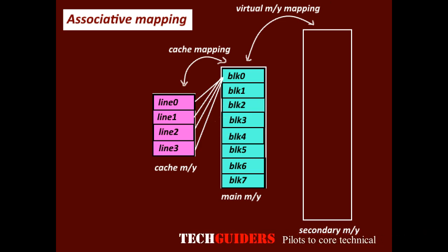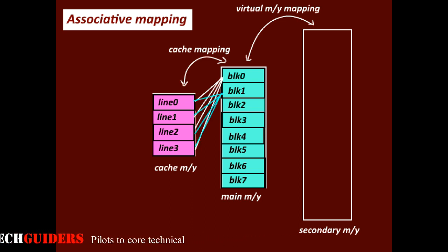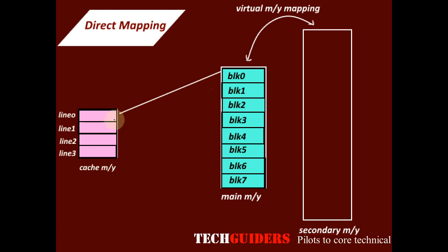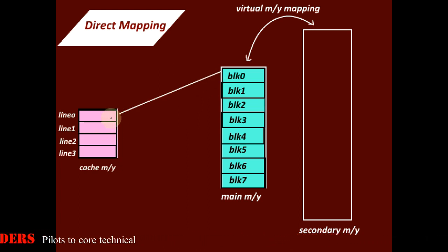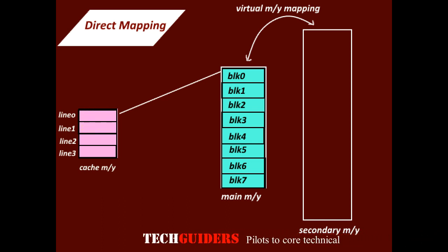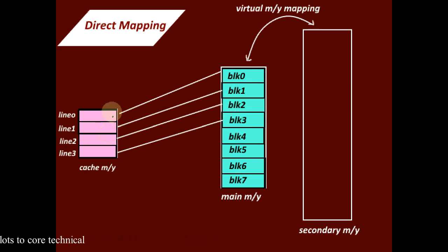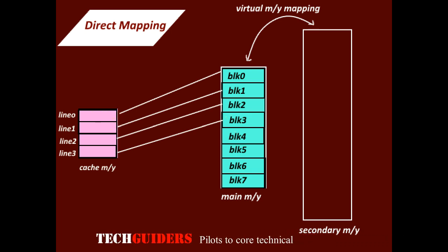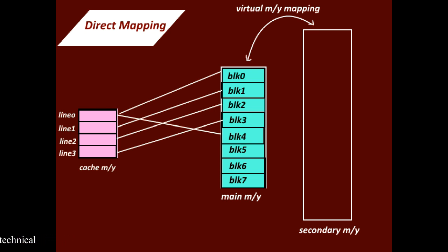In associative mapping, we can map any main memory block to any cache line. But in direct mapping, each main memory block can be mapped to one particular cache line. The first block maps to the first cache line, so block zero maps to cache line zero, block one to line one, block two to line two, and so on. Once cache lines are exhausted, we wrap around — block four maps to line zero, block five to line one, block six to line two.